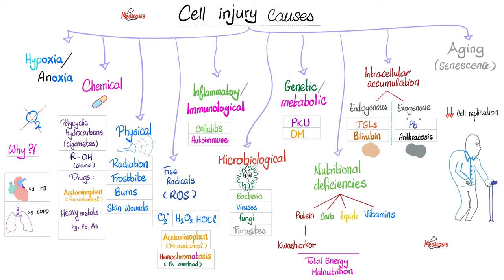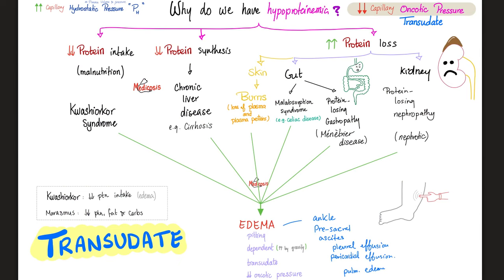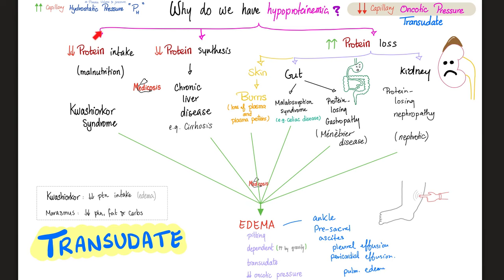Let's talk about kwashiorkor - protein energy malnutrition. What are the causes of low protein in my blood? Maybe I'm not eating it - kwashiorkor syndrome due to malnutrition of proteins. Or maybe my liver is not making it - we see this in chronic liver disease like cirrhosis. Or maybe I'm eating and making it, but losing it - wasting protein through skin in third-degree burns, or through the gut in Ménétrier's disease, malabsorption syndrome like celiac disease, or through the kidneys in nephrotic syndrome. All of these patients with low protein will have low oncotic pressure.